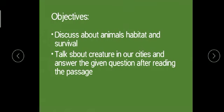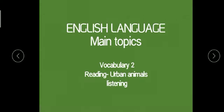The main objectives of this lesson are that at the end, the student will be able to discuss any animal's habitat and survival, talk about creatures in our cities, and answer given questions after reading the passage. The English language main topics we'll be discussing are vocabulary, reading urban animals, and listening.